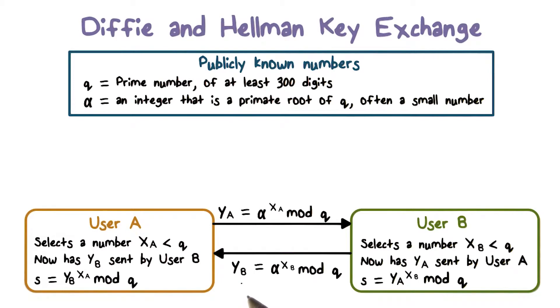Likewise, user B upon receiving ya computes a key, that is ya raised to the power of xb mod q, which is the same as alpha raised to the power of xa times xb mod q. That is, both sides have in effect computed the same key. In other words, now user A and user B have a shared secret key.